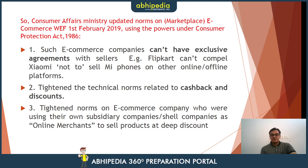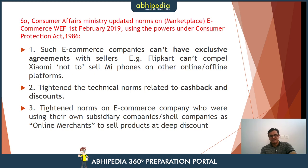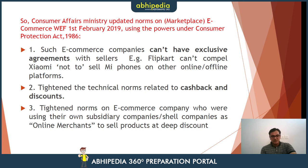Further, the norms tightened rules related to cashback and discounts — very aggressive cashbacks and discounts were being promised, which always threatened local shopkeepers in the physical market. The rules were tightened so that competitive practices remain fair between e-commerce and physical commerce. Norms were also tightened on e-commerce companies using subsidiary or shell companies as online merchants to sell products at deep discounts — for example, showing a product priced at ₹1,000, then applying a 60–70% discount to sell it at ₹300, creating misleading price perceptions.